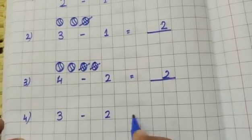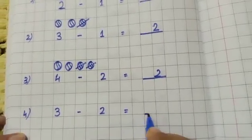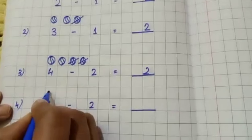Okay, now number four. Number four is 3 minus 2 equal to dash. So here again I am drawing three balls.